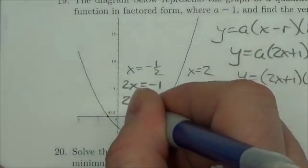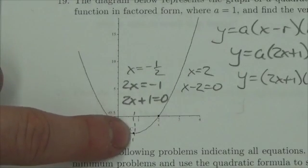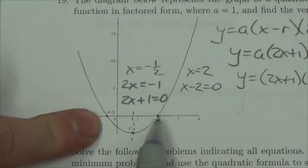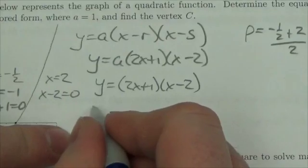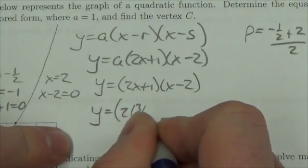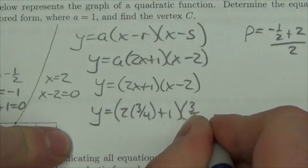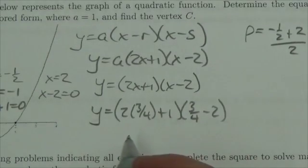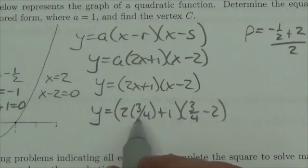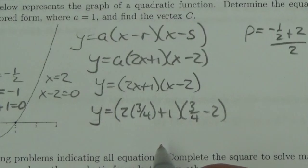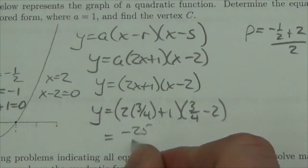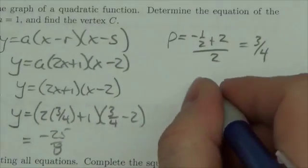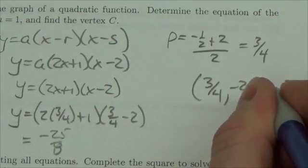So my axis of symmetry is going to cut through the vertex at x equals three quarters — it's halfway between negative 0.5 and 2. Now to find the q-value of the vertex, I evaluate the equation at x equals three quarters: (2 times three quarters plus 1) times (three quarters minus 2). I'll do this on my calculator, and what I get is y equals negative 25 eighths. So my vertex is the point (three quarters, negative 25 eighths).